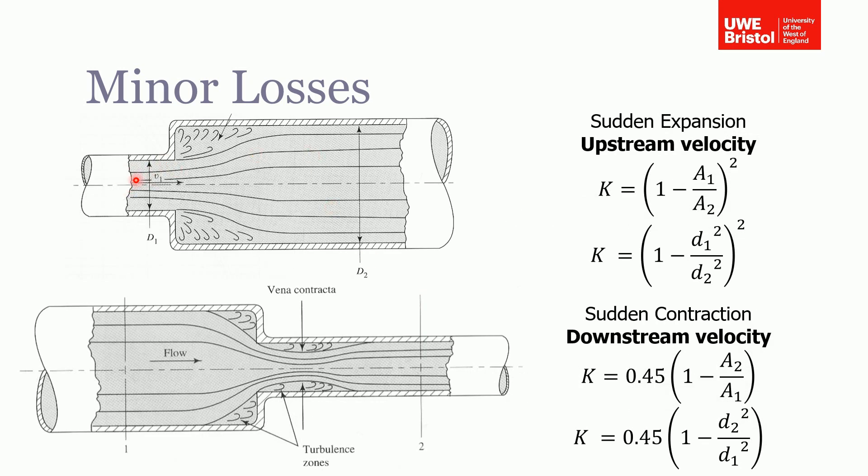Some other examples of minor losses are changes in diameter. Here we have a sudden expansion, going from a smaller diameter to a larger diameter, and the loss coefficient is given by this function of the area ratios all squared.